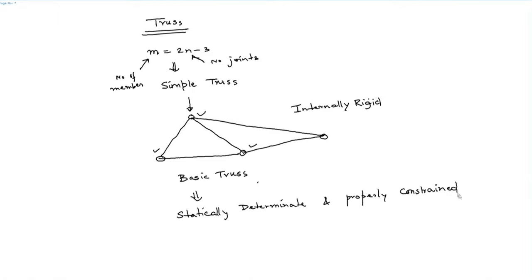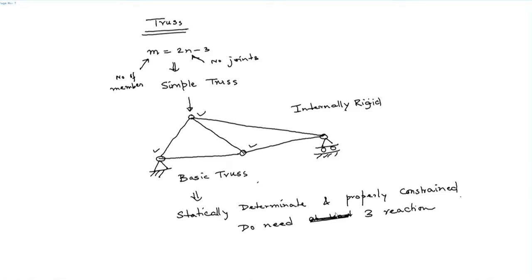To make the problem statically determinate and properly constrained, we need 3 reactions. The most appropriate approach is putting a hinge and a roller at one end — this truss will be properly constrained as well as statically determinate. That is why m plus 3 equals 2n — the number 3 comes from the 3 reactions.